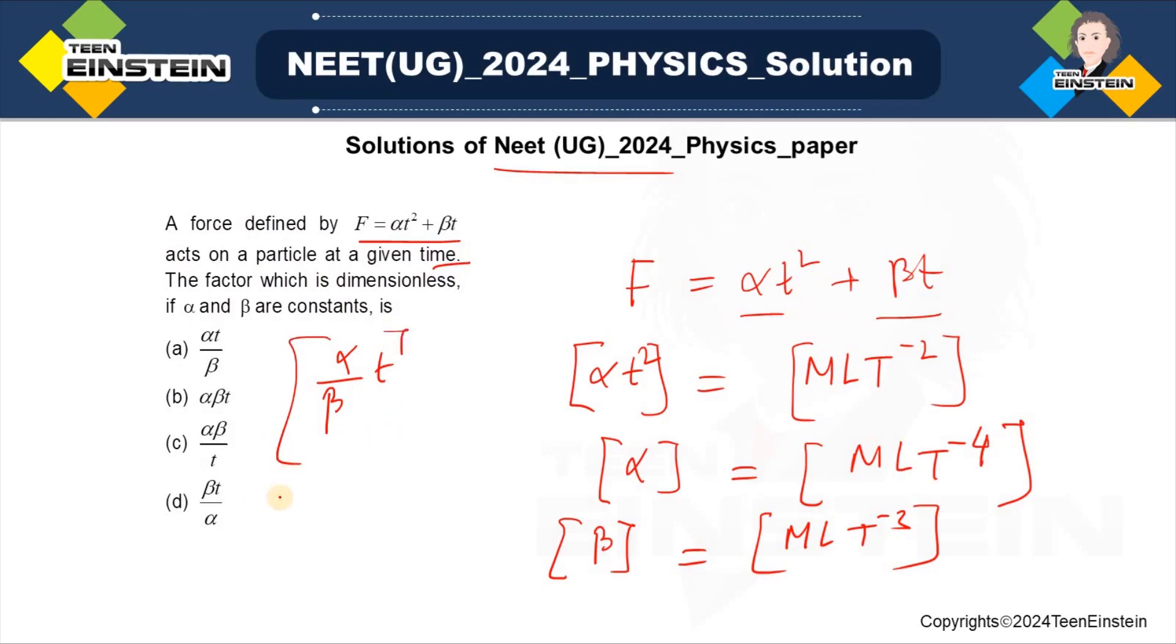So, what is the dimension of this term? See, look here, alpha has dimension ML T to the power minus 4. And beta has dimension ML T to the power minus 3 into T. T means having dimension T.